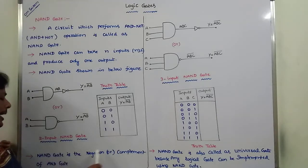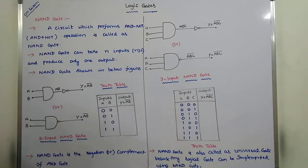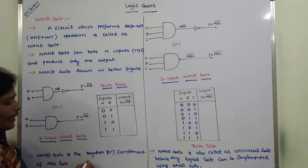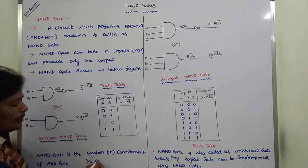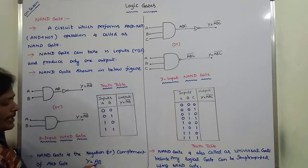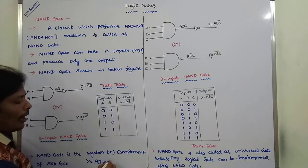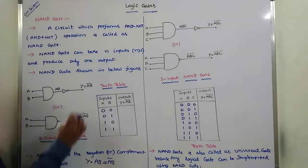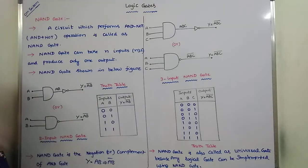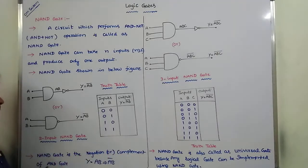The NAND gate is the negation or complement of the AND gate. The output of the AND gate is Y = AB. The complement of the output of the AND gate is AB whole bar, which is exactly what the NAND gate produces. So we can say that the NAND gate is the negation or complement of the AND gate.